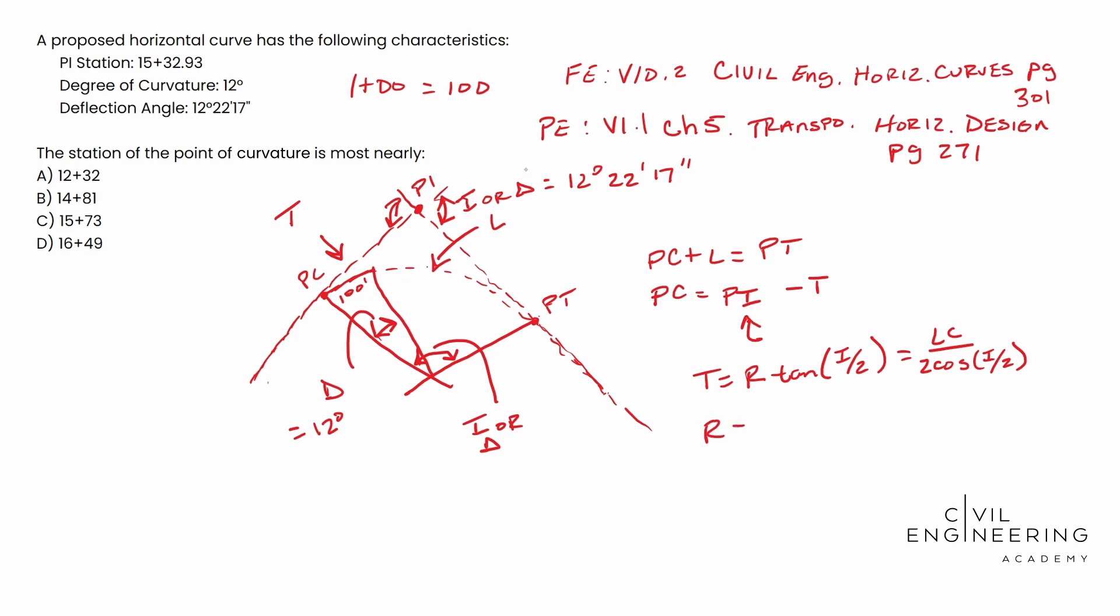We can solve for the R though. This R is actually going to be 5729.58, and the PE uses point six, not point five eight, but we're going to use point five eight just to be more particular. And that's over D, the degree of curvature. And so when we do that, this is equal to 12 degrees. When we solve for that guy, you end up with 477.465 feet.